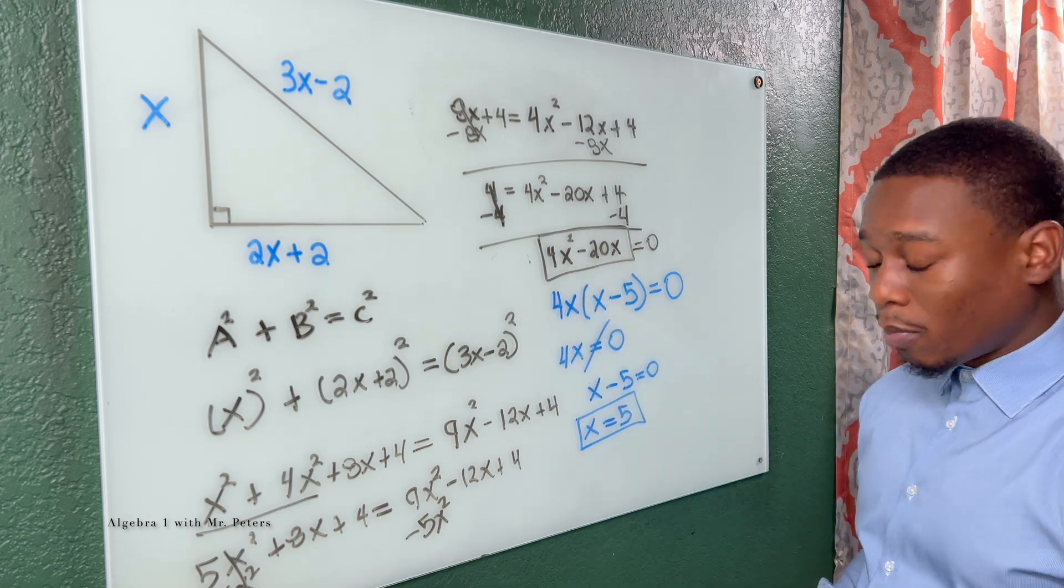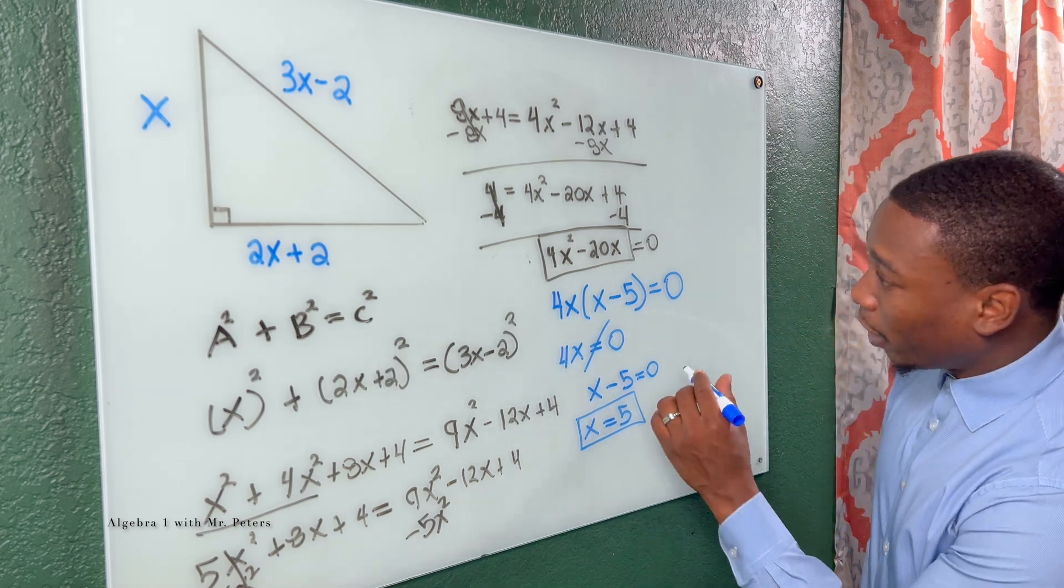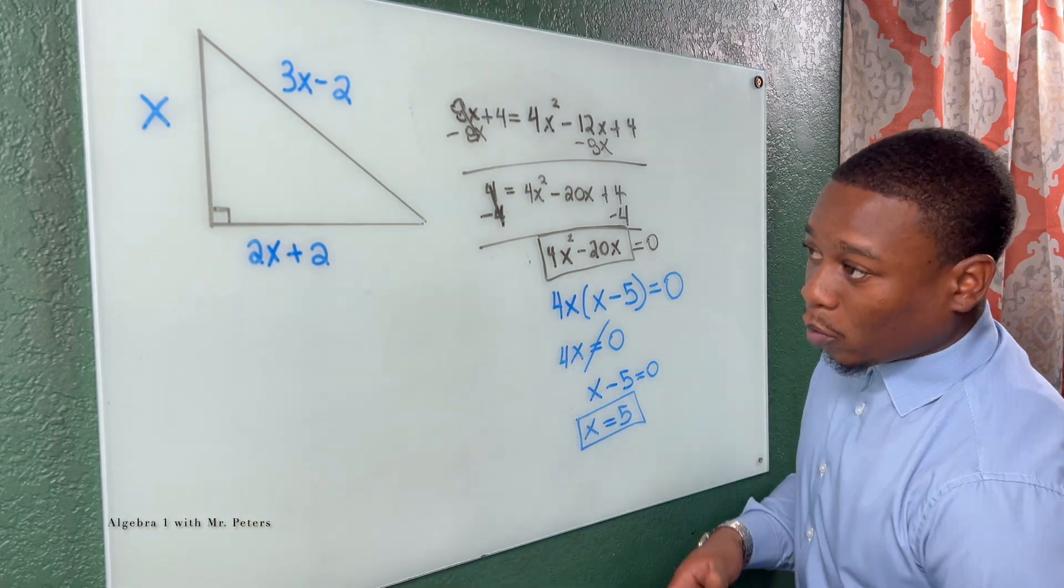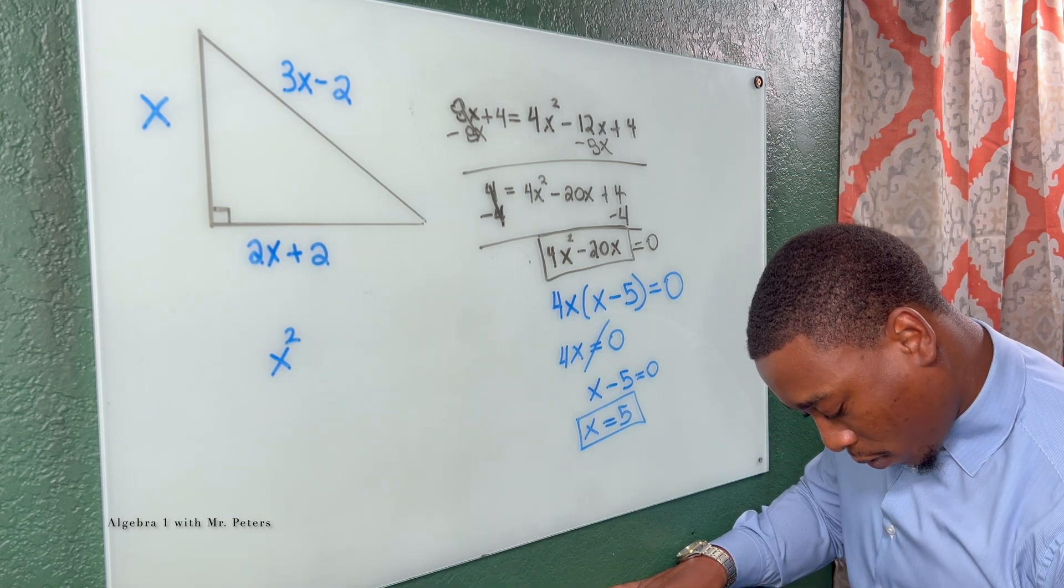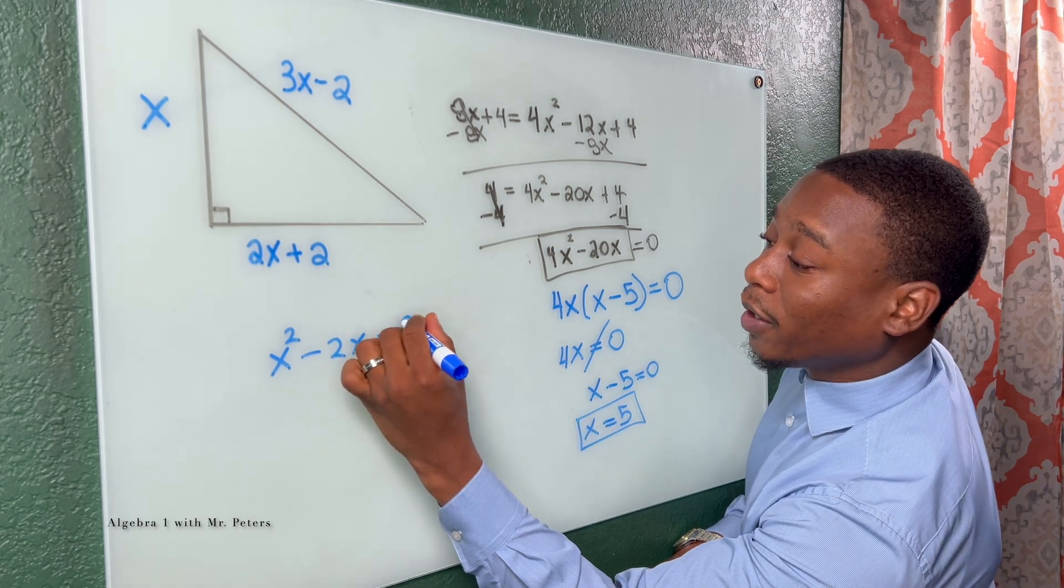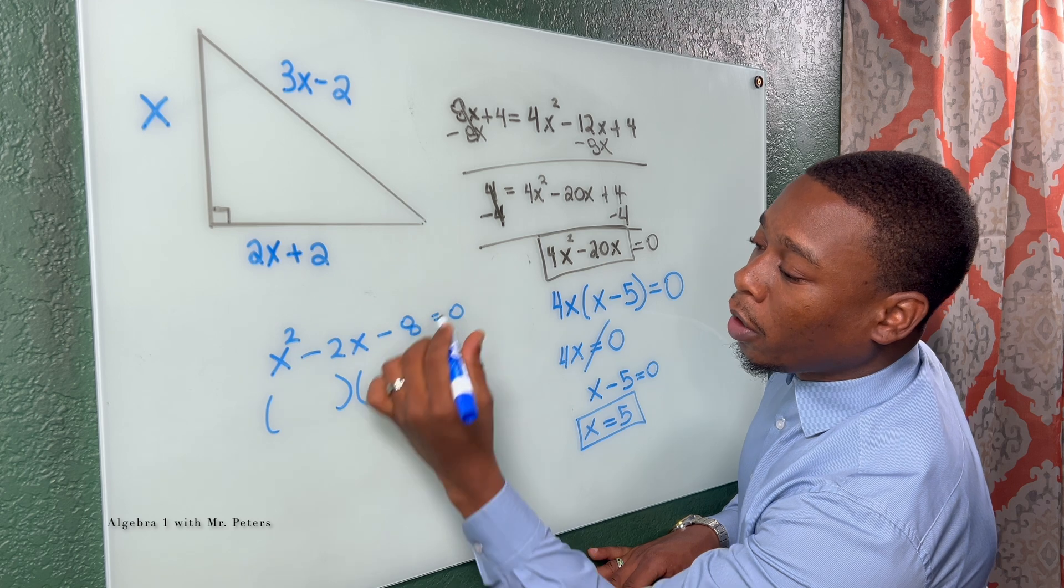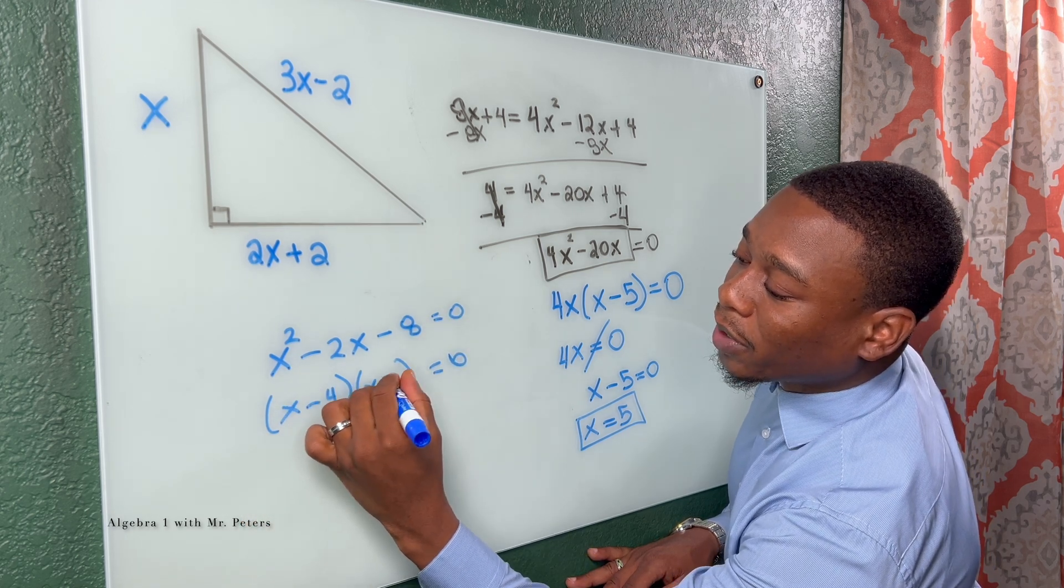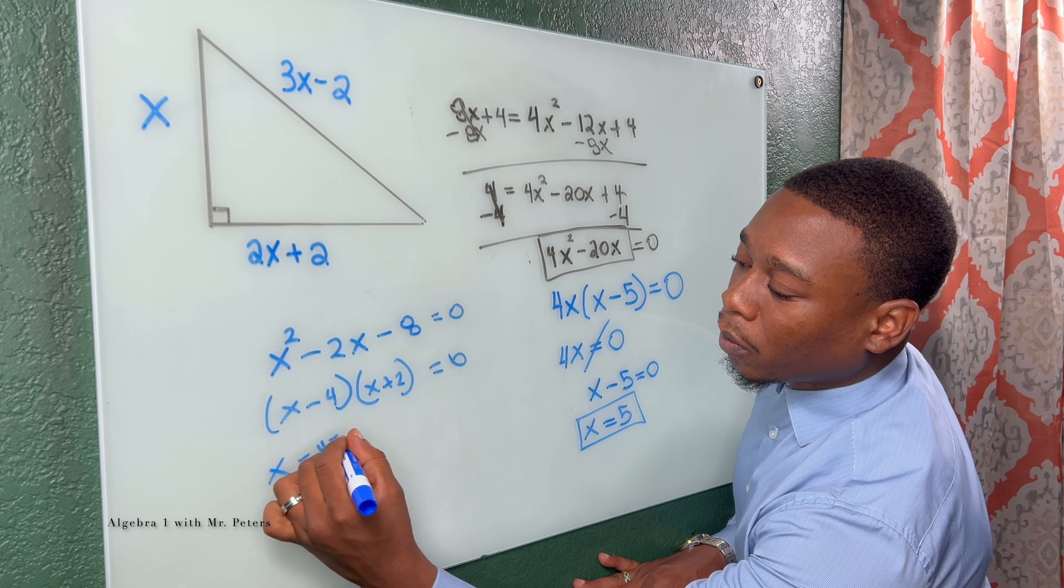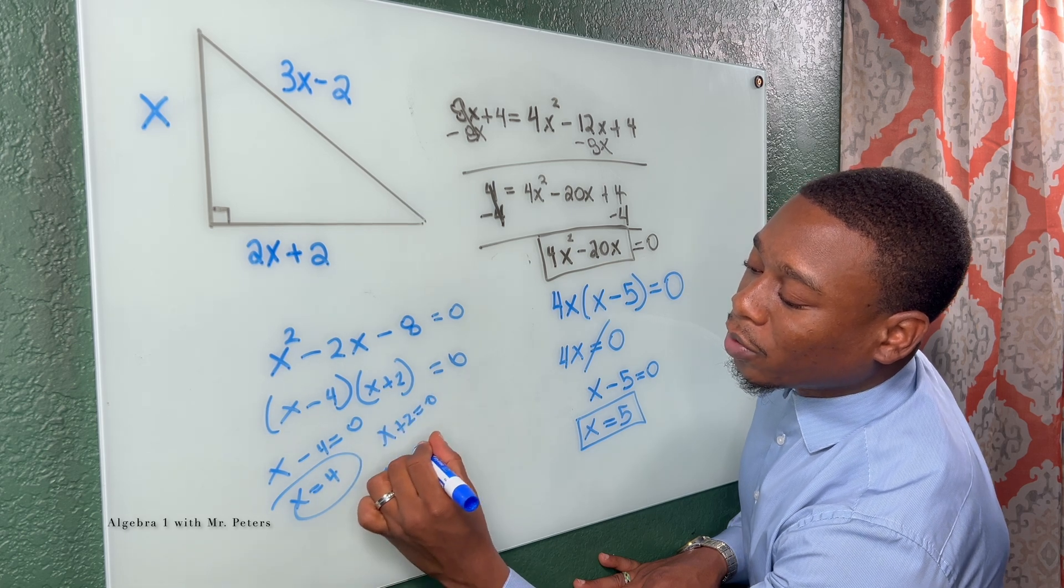But before we get there, one major tip. This is another place where I see students make mistakes. So let's say we had X squared minus 2X minus 8. Let's say this is the quadratic equation. Set equal to 0 and we get X minus 4 times X plus 2. That should give us the correct factoring. Once we set both of these equal to 0, we'll get X is equal to 4. And then the second factor, when we set equal to 0, X is equal to negative 2.